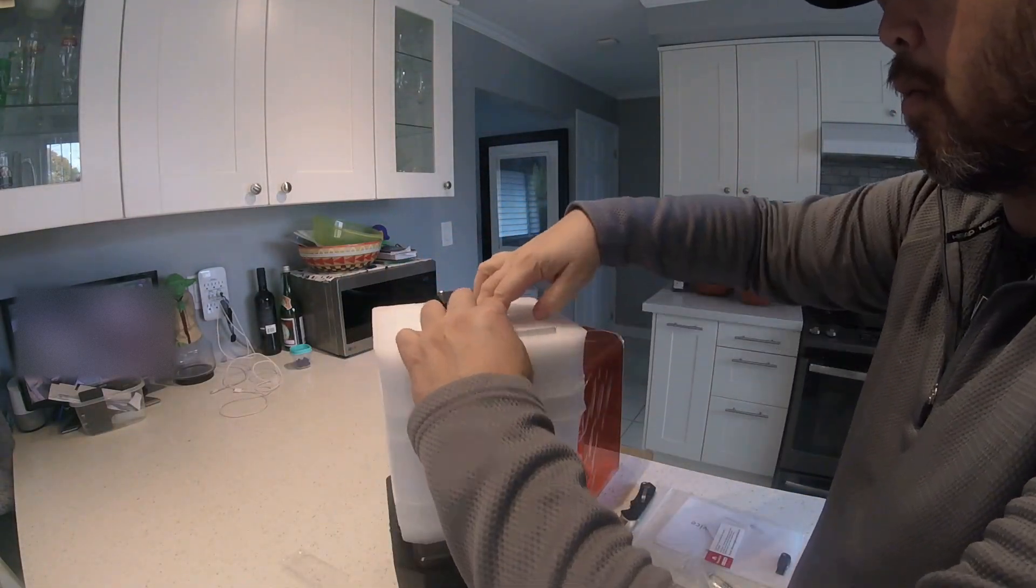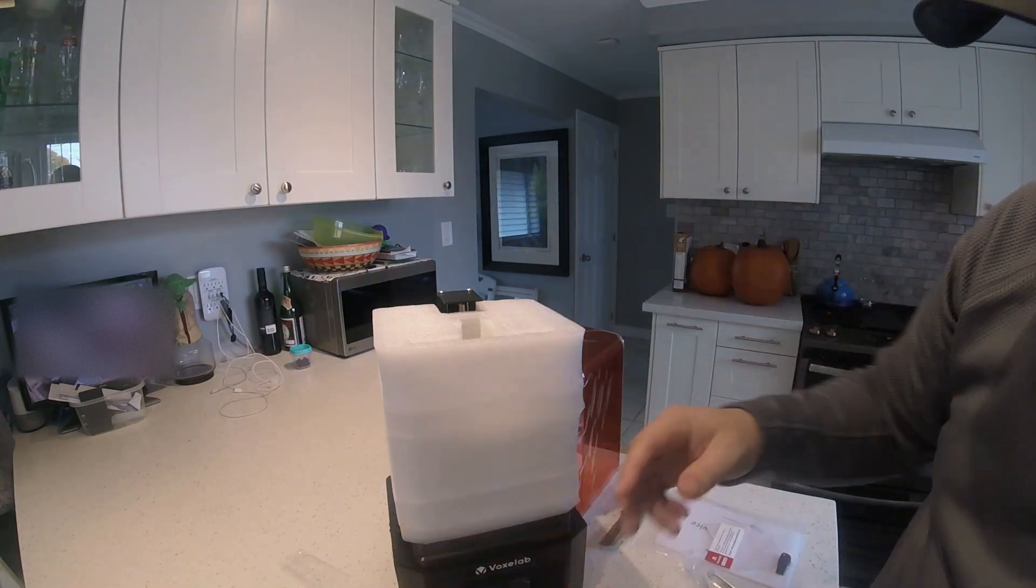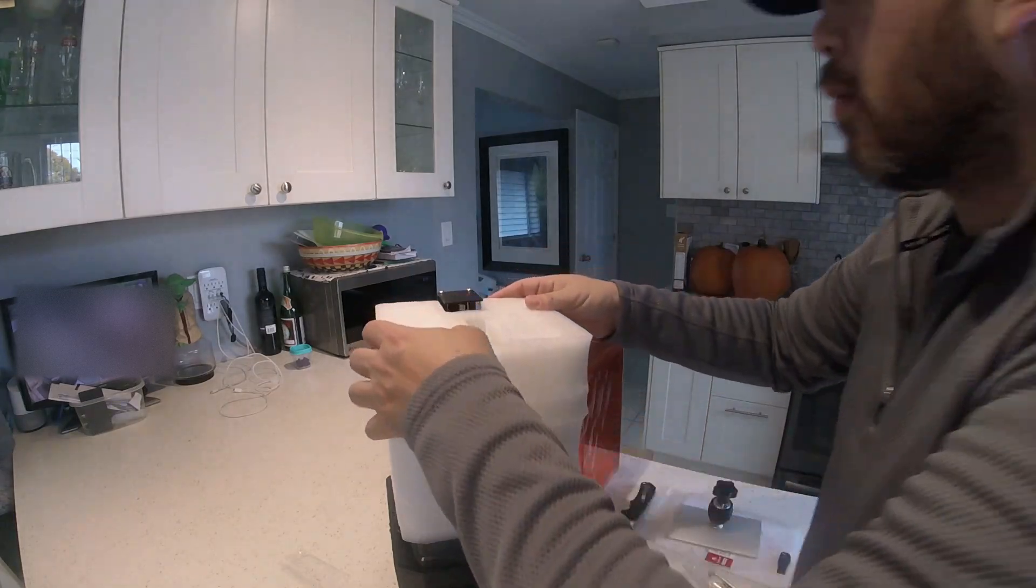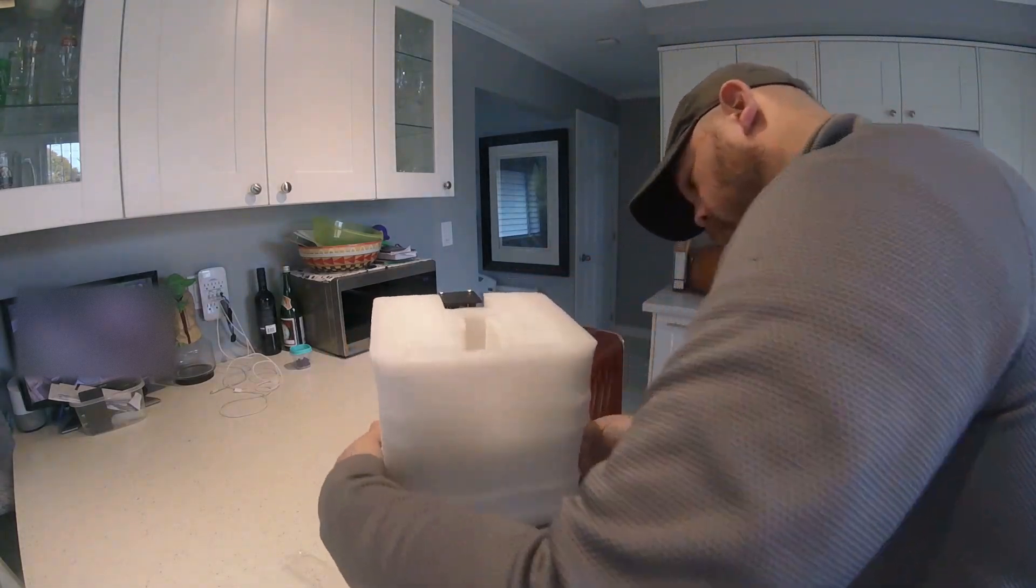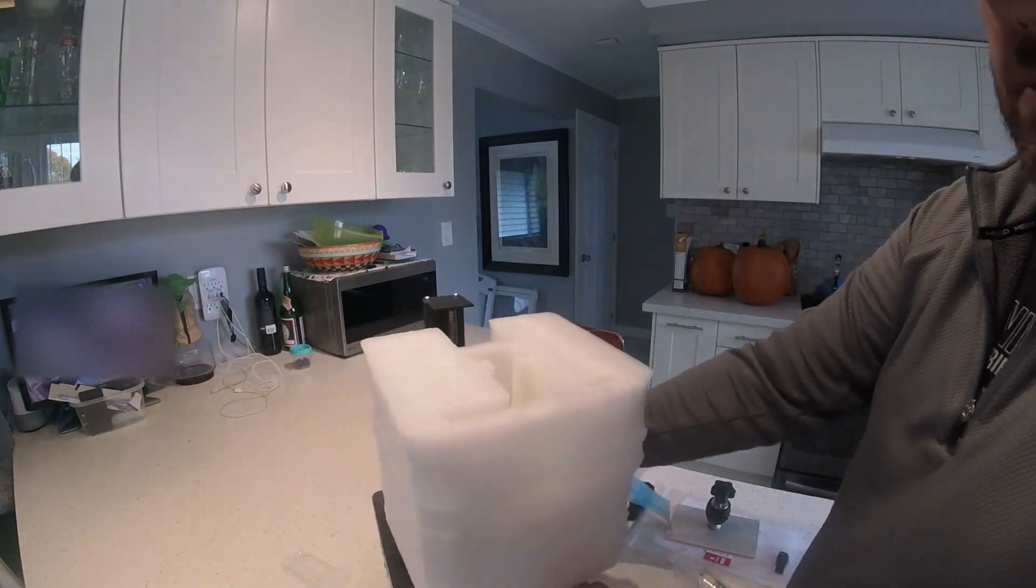Now I'm also going to be pulling out right here is the build plate. Unique design. It's actually concave on the top and flat on the bottom. Great for letting the resin drip off. Unlike some of the other printers on the market that are flat, you have to let it drip to get all the resin off the top.